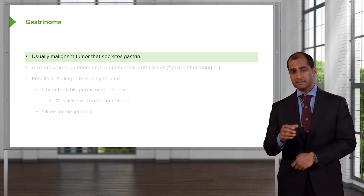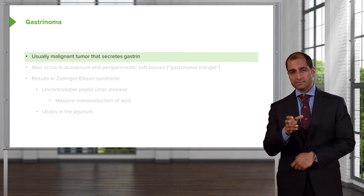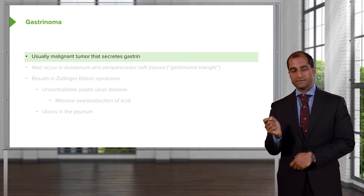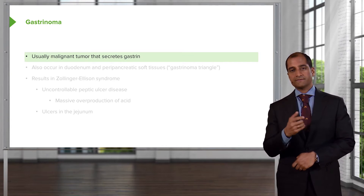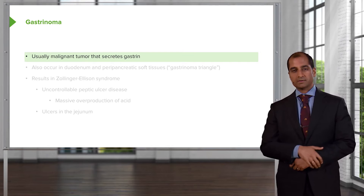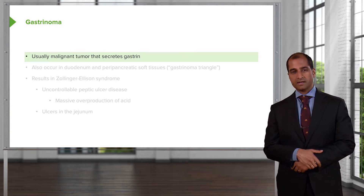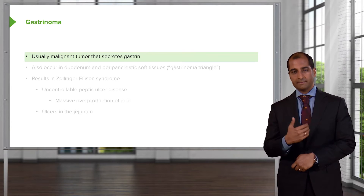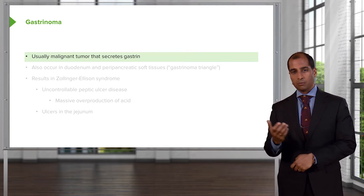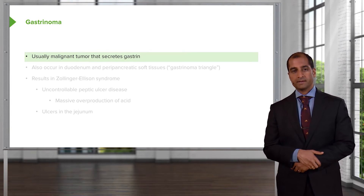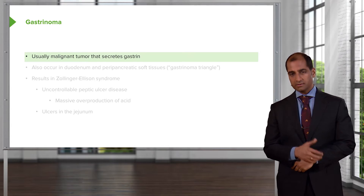To make this really interesting: if you are thinking gastrin, physiologically where is gastrin being released? From your G cells in the antrum of the stomach. So would you please remind me where we are in the body? The pancreas.